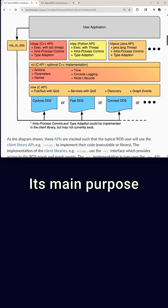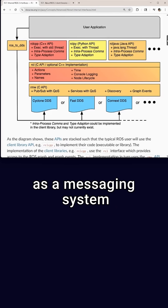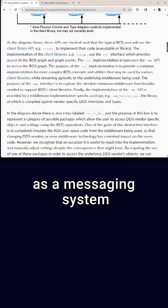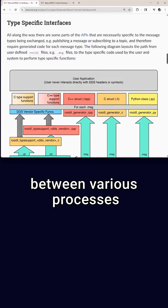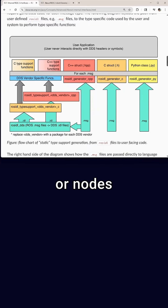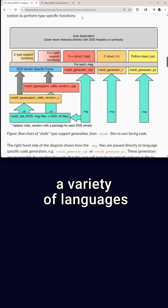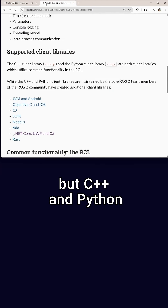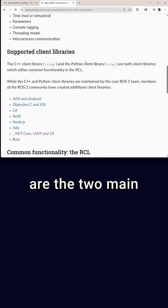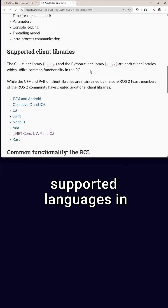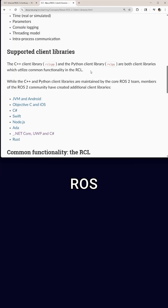Its main purpose is to act as a messaging system between various processes or nodes. These nodes can be written in a variety of languages, but C++ and Python are the two main supported languages in ROS.